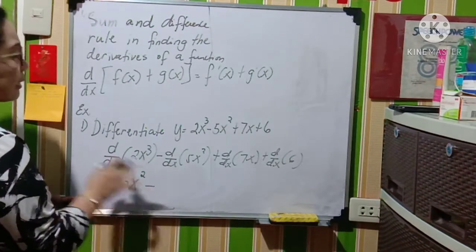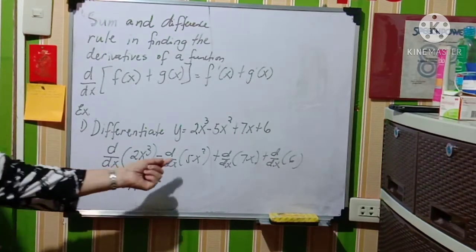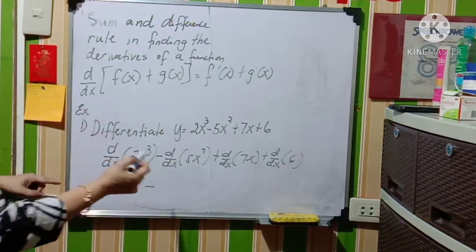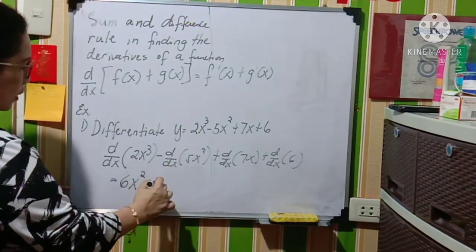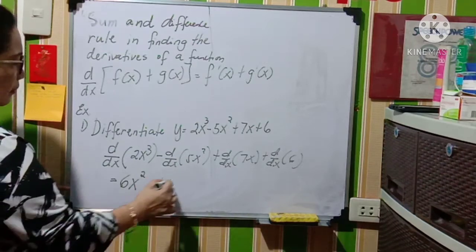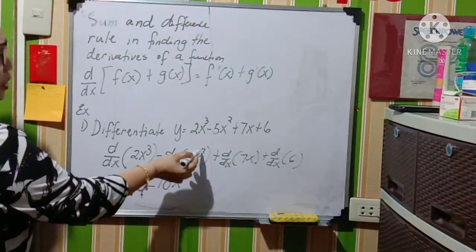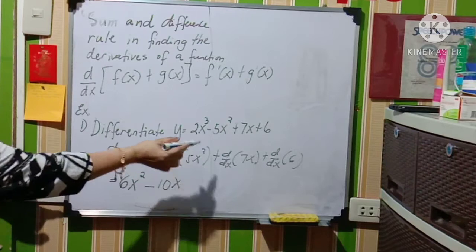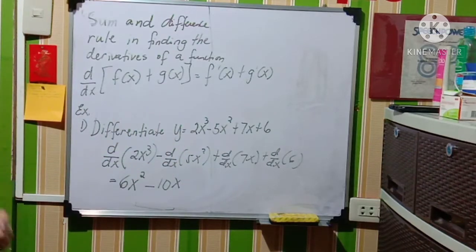Get the derivative of 5x squared. So again, 2 times 5 will give you 10x. So no need to write the exponent since 2 minus 1 is 1.